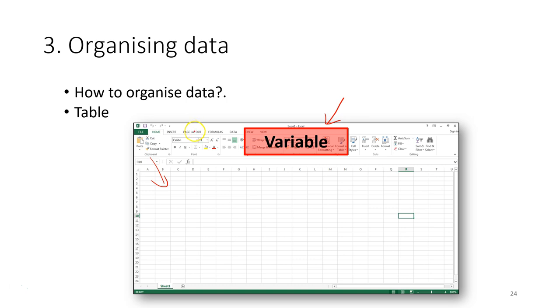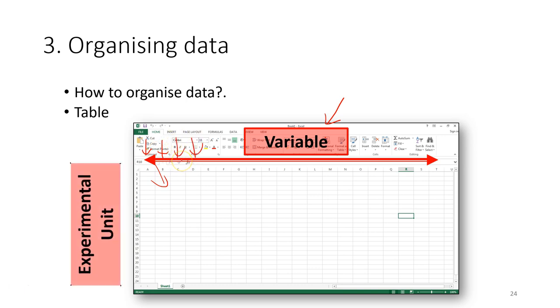The data that you arrange in a table should be readable by the computer. Usually we will have columns - each of these columns is what we call a variable - and then we have rows, and each of these rows is what we call the experimental unit. All your data should be arranged in this way, and there should be no cell merging or empty cells.